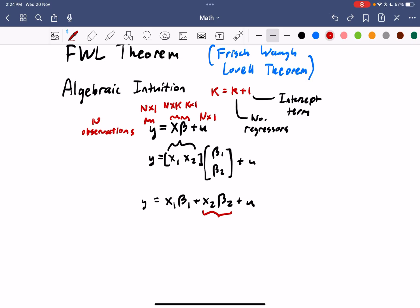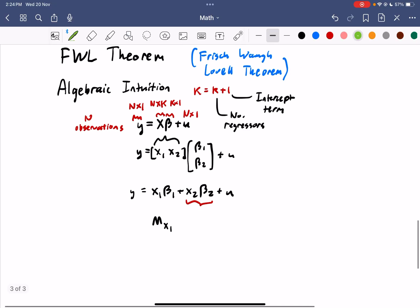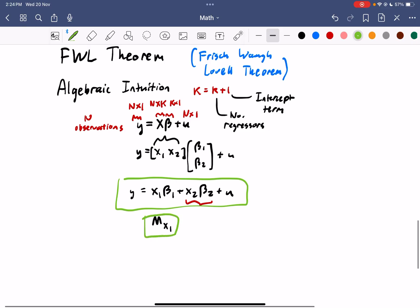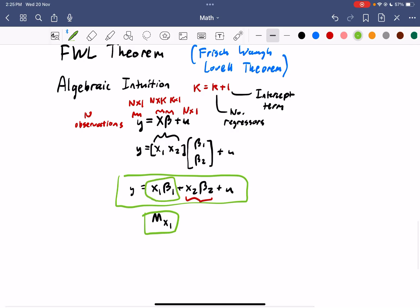We can do so by simply using what we call an orthogonal projection matrix, or in notation form is known as M with a subscript of x1. So simply put, we can multiply this entire linear regression model by this orthogonal projection matrix to allow ourselves to get rid of this part as I have boxed here in green.